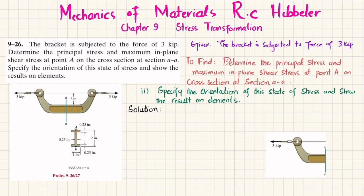Let's start with the solution. When you section it at section AA, you will have a reaction of a normal force N perpendicular to this surface, as well as a shear force V and a moment M. You will find V, M, and N by using equations of equilibrium.